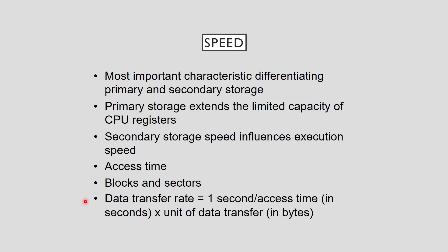Block size is normally stated in bytes and can vary widely between storage devices and even within a single storage device. A 512-byte block is the most common data transfer unit for magnetic disks. The term sector describes the data transfer unit for magnetic disk and optical disk drives. A storage device's data transfer rate is computed by dividing one by the access time.